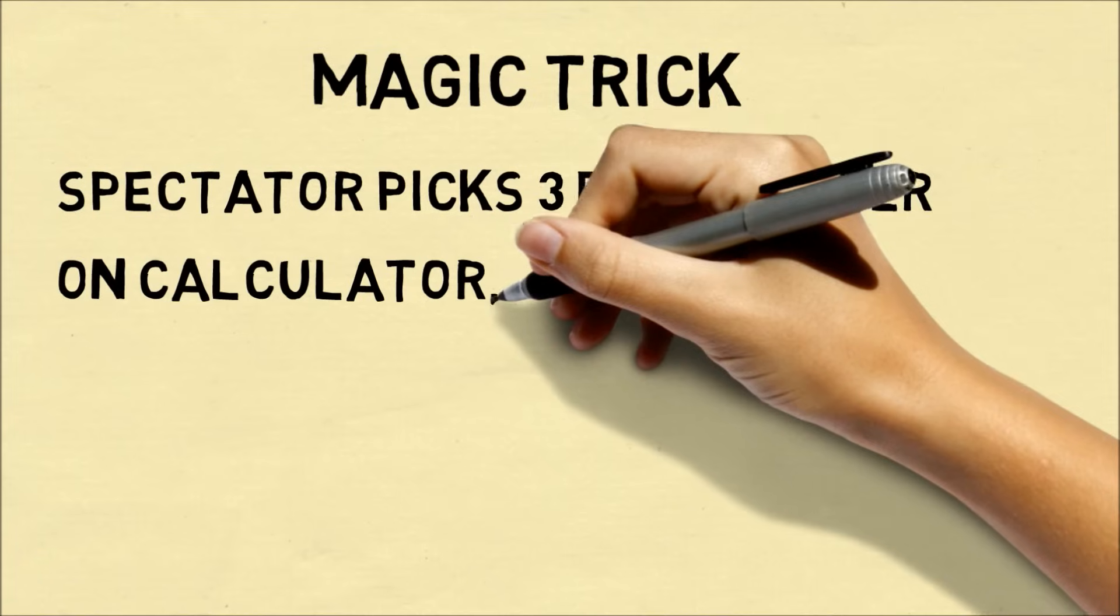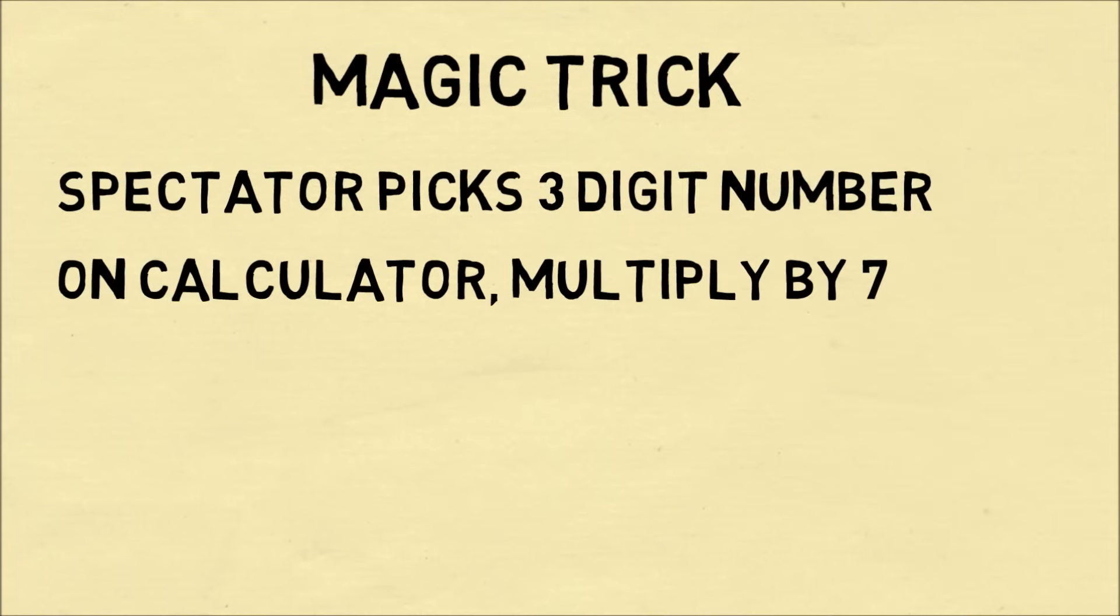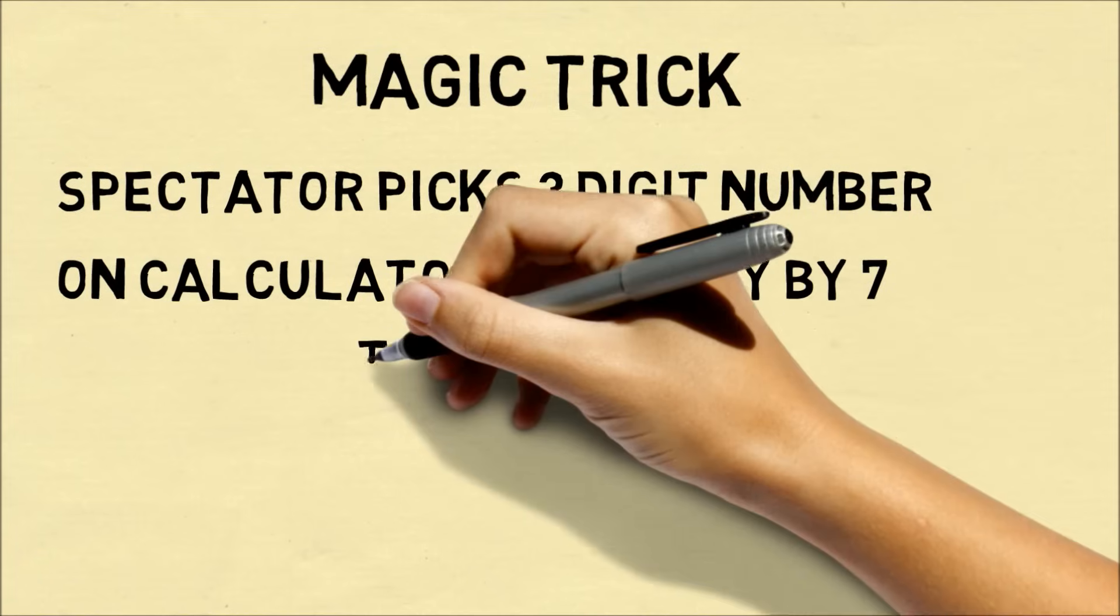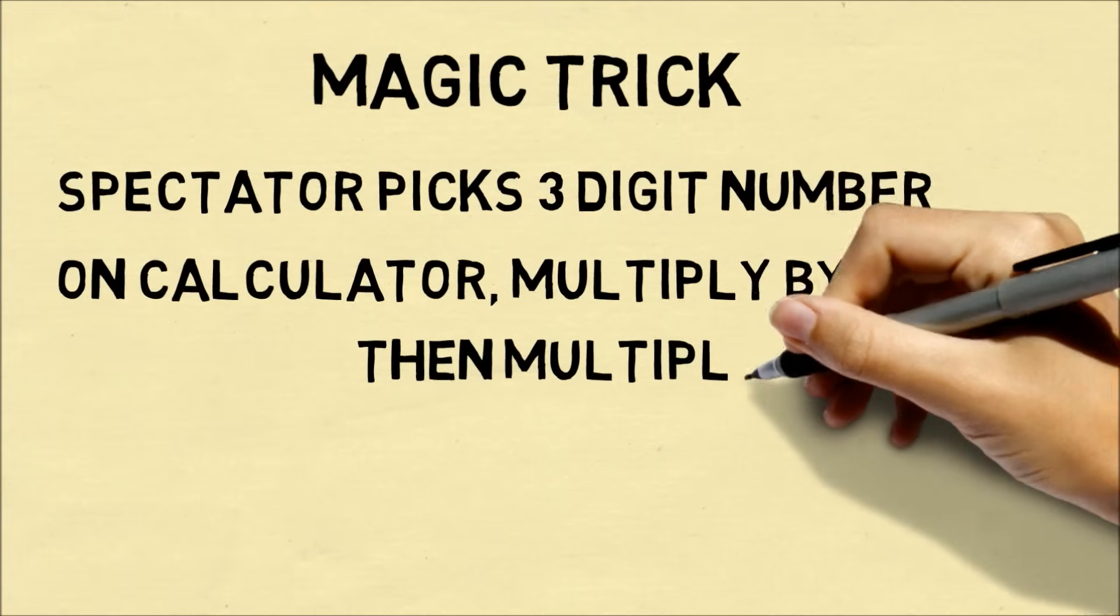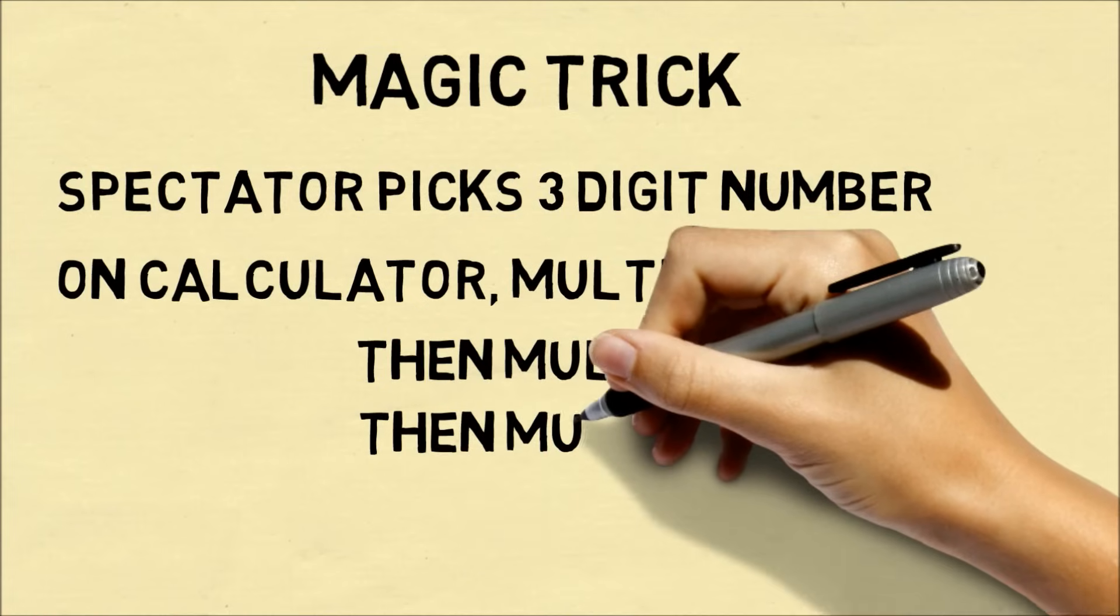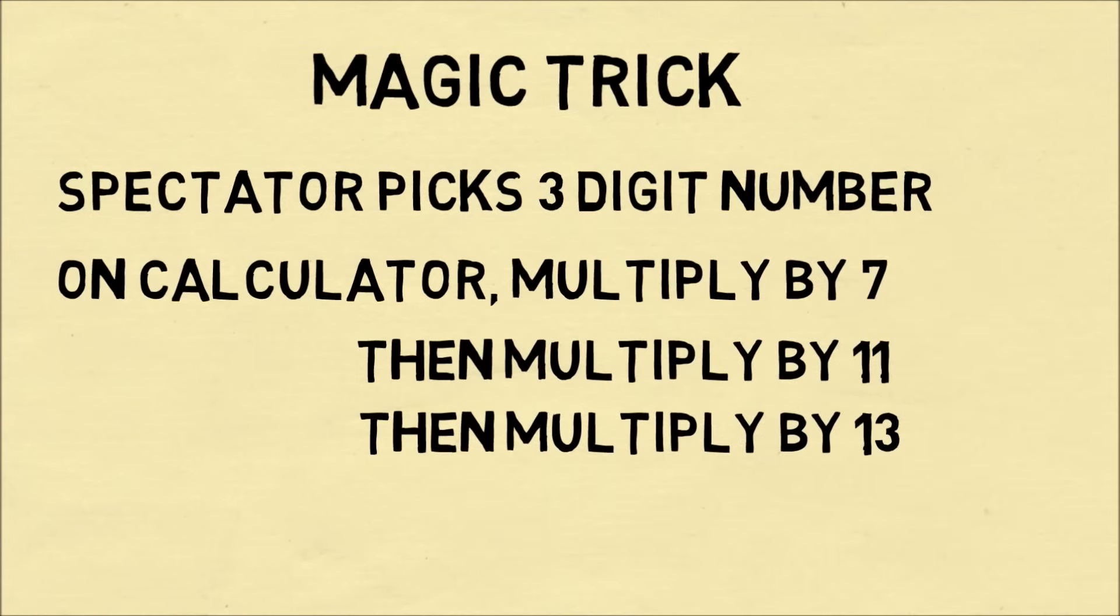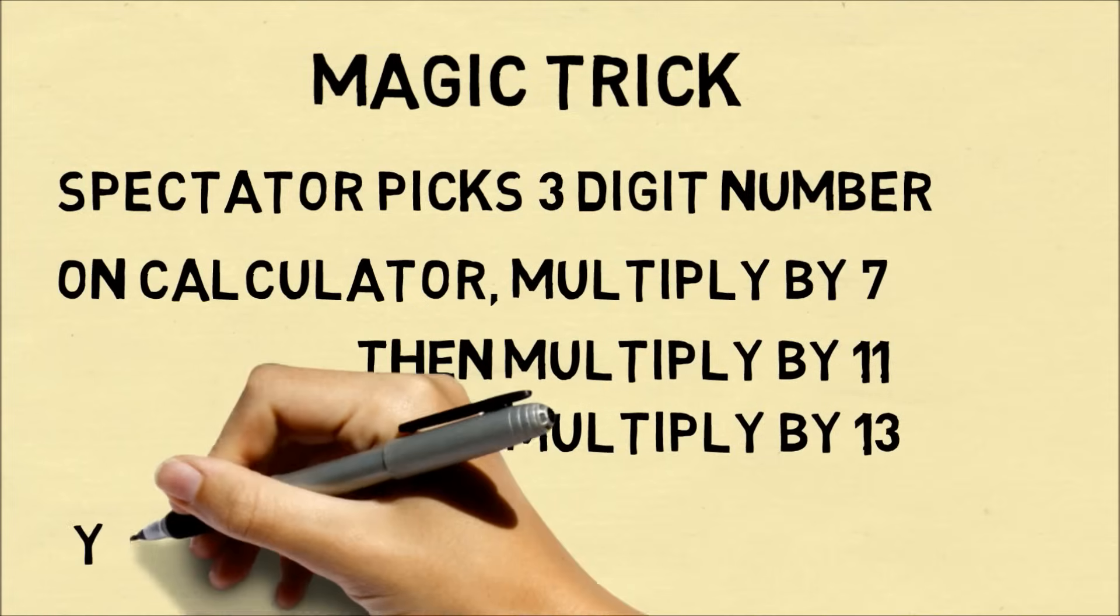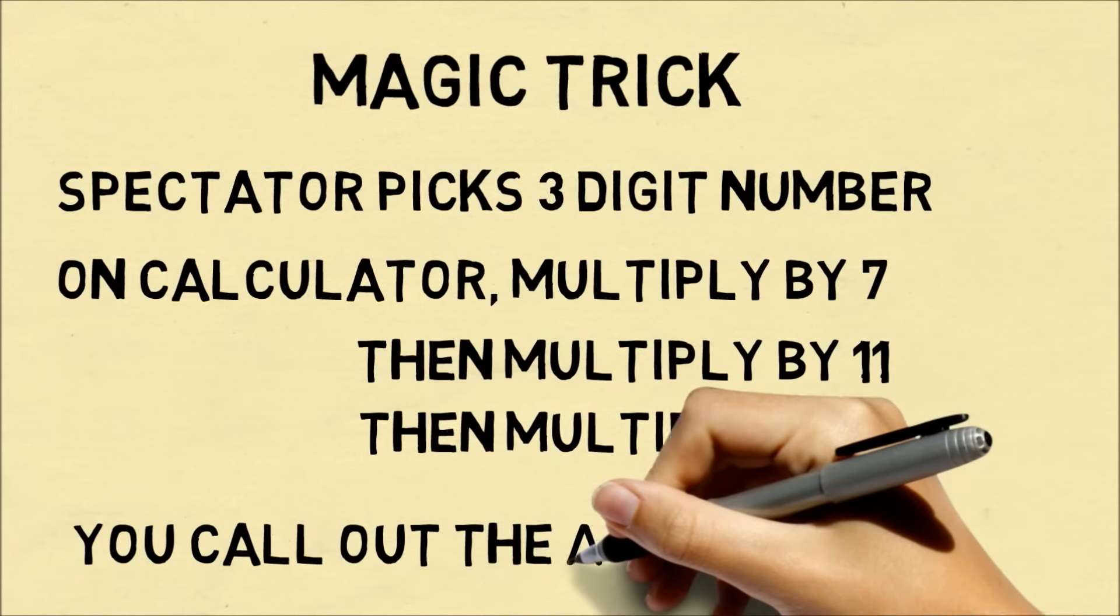So you ask them to take out a calculator and multiply the number by 7. They don't tell you the intermediate result. Then you have them multiply it by 11, and you then tell them, go ahead and multiply the number by 13. Even before they can read the answer on their calculator, you're going to call out the answer.